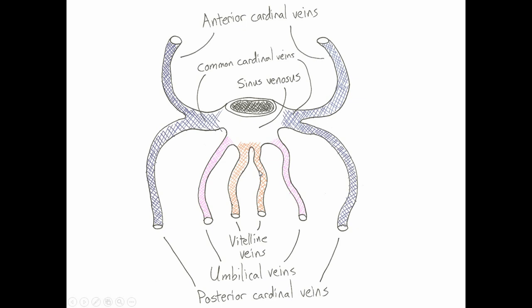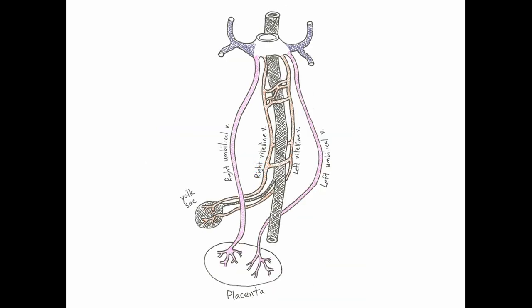So let's talk about how we go from this weird looking creature to the mature venous system. Here we've got the gut tube, the placenta, and the left and right umbilical veins connected to it bringing blood back to the sinus venosus. We also have the yolk sac connected to the gut tube, and the vitelline veins heading back to the sinus venosus from the yolk sac. Note that there are anastomoses between the right and left vitelline veins — some passing anterior or posterior to the gut tube, and one occurring just before the heart. That's going to become very important in just a bit.